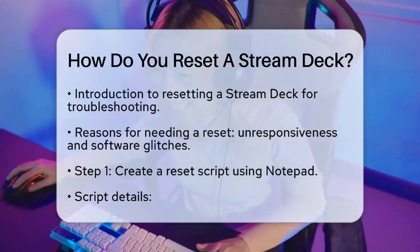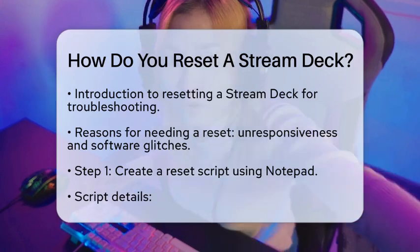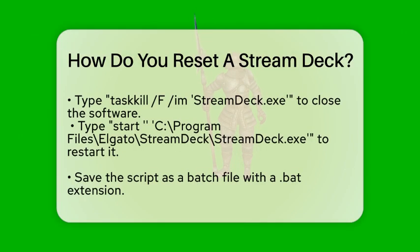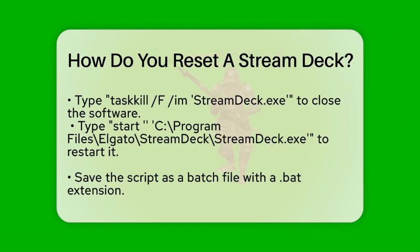To start the reset process from your computer, you can create a reset script. Open Notepad and type in the following lines: Task Kill Stream Deck. Start C:/Program Files/Elgato/Stream Deck/Stream Deck. After typing this, save the file as a batch file with a .BAT extension. This script will first close the Stream Deck software and then restart it.